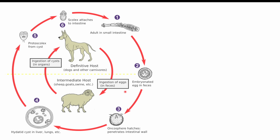Humans are actually not the definitive host of this particular parasite. The definitive host is a dog or some other carnivore like a fox. These animals get infected by this tapeworm through ingestion of internal organs of other animals. If they kill an animal and eat some organ meat, they ingest the cyst, which then develops into an adult tapeworm inside the dog's small intestine. Those tapeworms then release eggs, which are transmitted into the external environment via the feces of the infected animal.